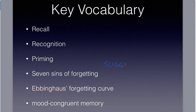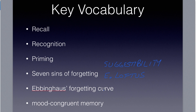Suggestibility is the next one — this is the one you'll learn about later in the chapter with Elizabeth Loftus and her work. Suggestibility is misinformation: 'How hard did the car crash into the other car?' when maybe there wasn't a crash at all, but by hearing the word 'crash' you remember things differently. Bias is when our previous beliefs color our memories, making us forget what really happened.